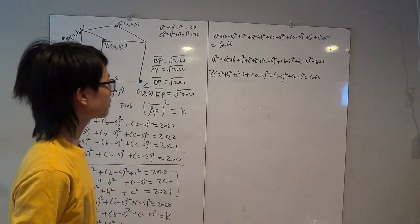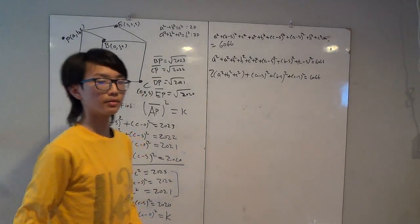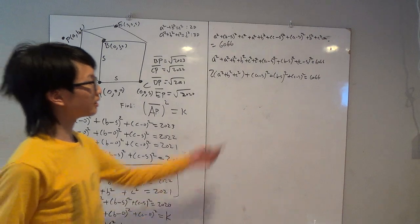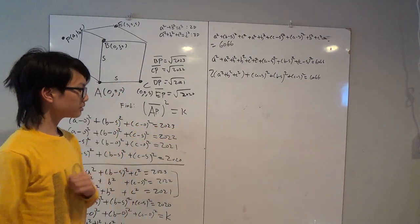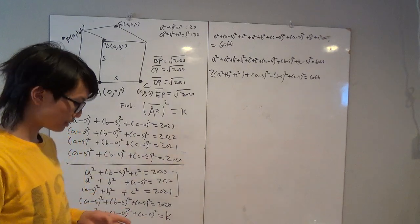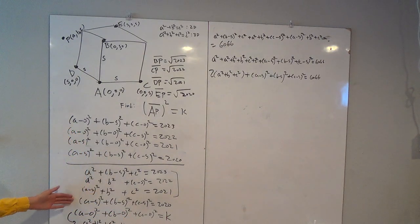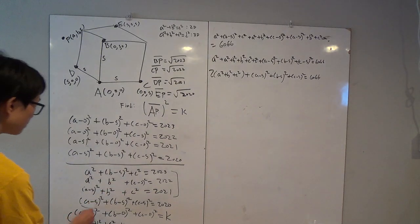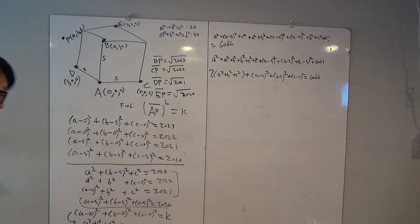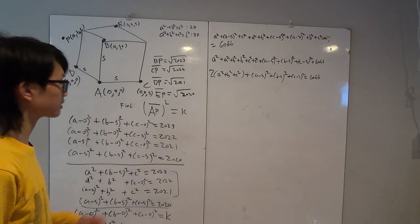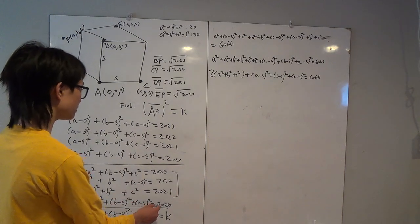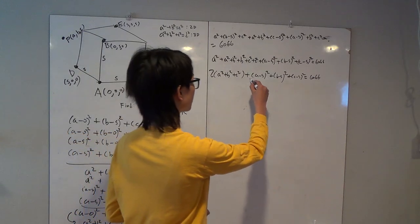At this point you may think we've run into a problem, because we don't know what S is — we're not given the side length of the cube. But it turns out we will not need S. Looking back at our four original given equations, we haven't used the fourth one yet.